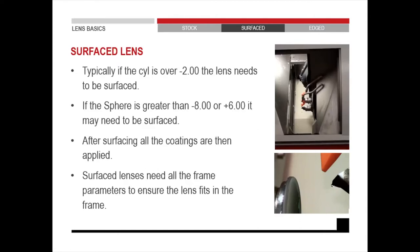Usually a surface lens is anything above a minus 2 sphere. On stock lenses, we do have the 1.56 which goes up to a minus 4 sphere in stock, but that is an exception to the rule. If the sphere is greater than minus 8 or plus 6, it needs to be surfaced. This is more or less just a rule of thumb to help you.